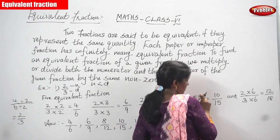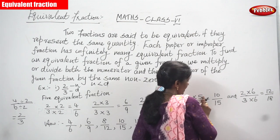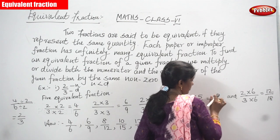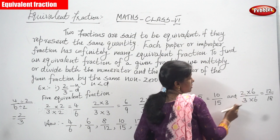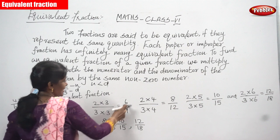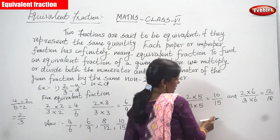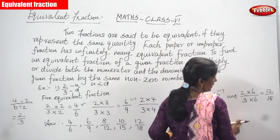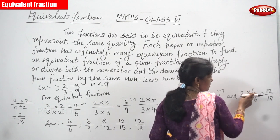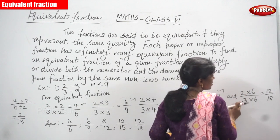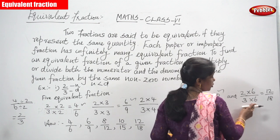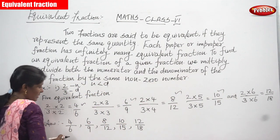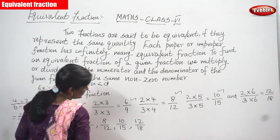Next, taking the number 5: numerator multiplied by 5 gives 2 into 5 = 10, and 3 into 5 = 15, so we get 10 by 15. Then 2 by 3 is multiplied by 6: 2 into 6 = 12 and 3 into 6 = 18, giving 12 by 18. I need only 5 equivalent fractions, so: 4 by 6, 6 by 9, 8 by 12, 10 by 15 and 12 by 18.